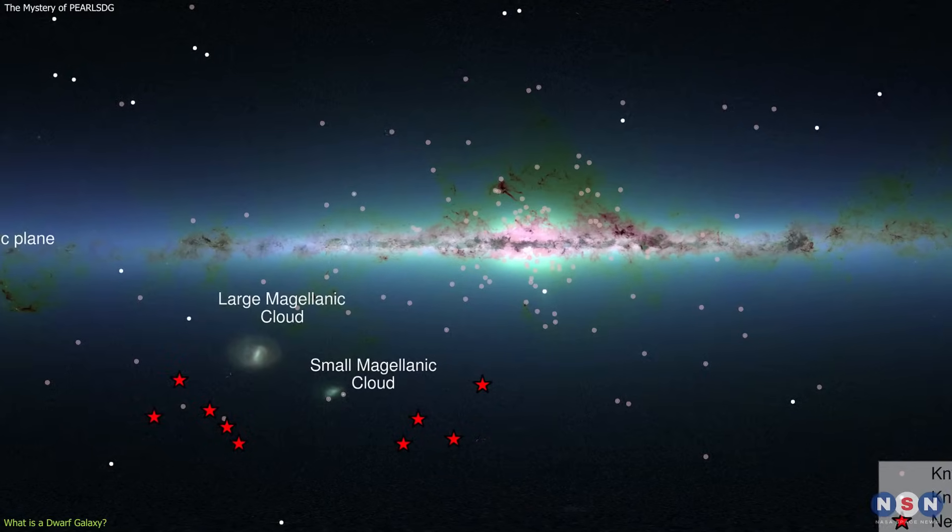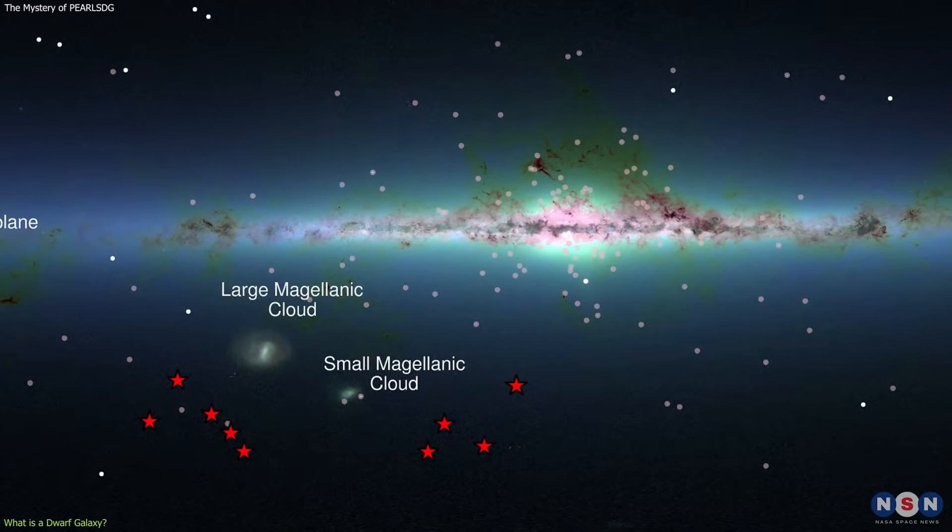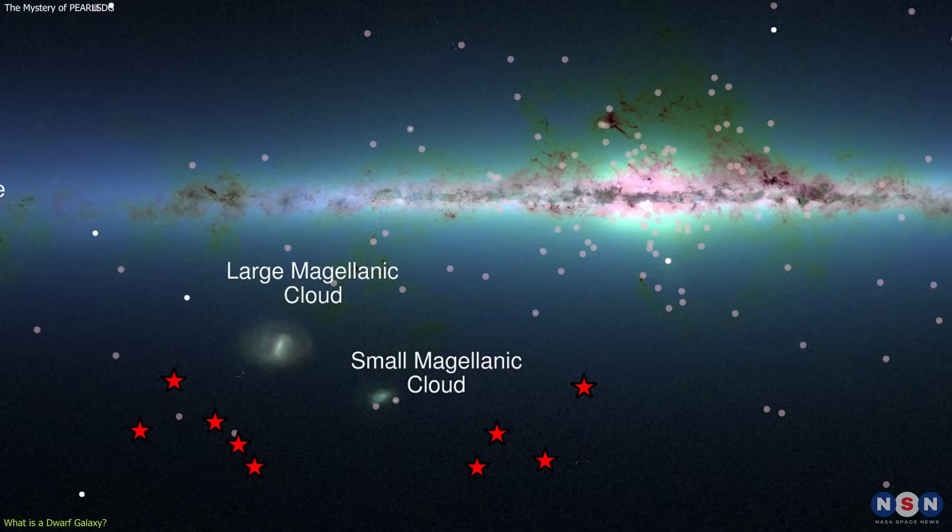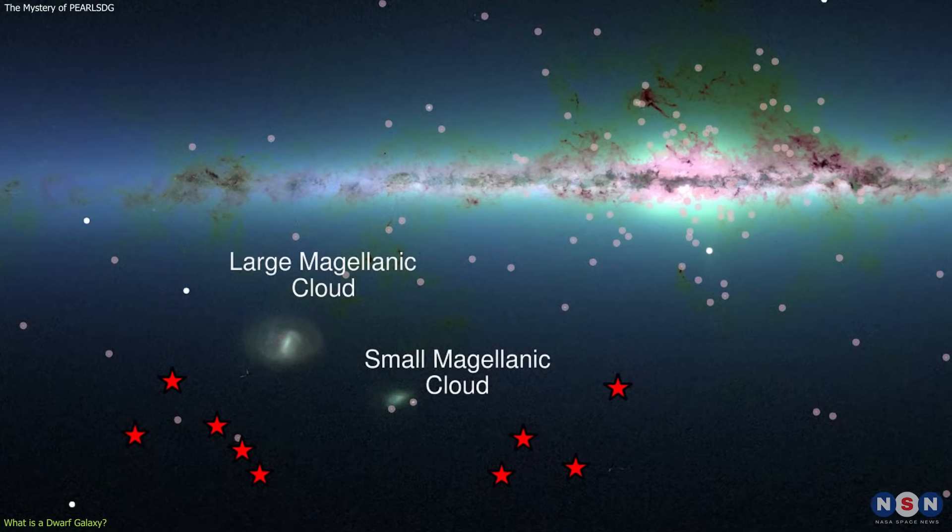For example, the Milky Way has about 50 dwarf galaxies as its companions, such as the large and small Magellanic clouds, which are visible in the southern hemisphere.